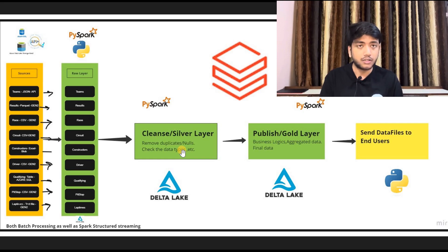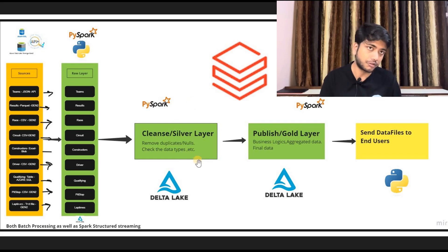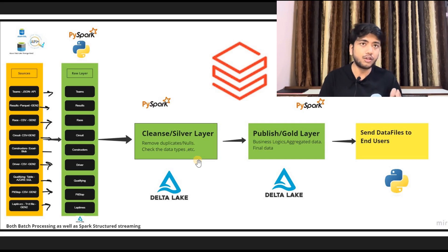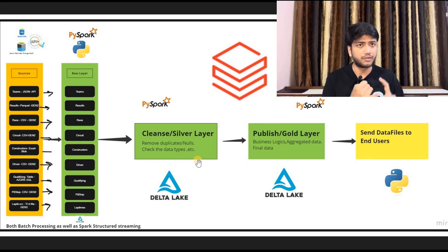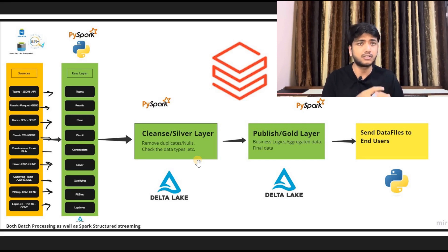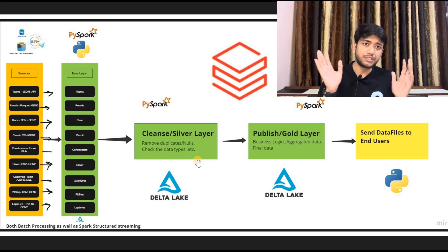After that we have some business logic to add, and those things are done in our publish layer, also called the gold layer. Here we are creating snowflake schema and star schema, making fact tables and dimension tables, and writing various business logic.